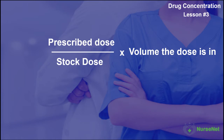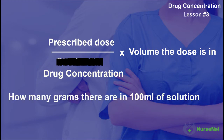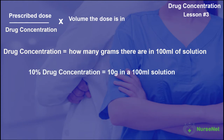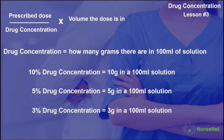What if you're trying to work out how much of a drug you should administer if you aren't given a stock dose but you're given a drug concentration, which is fairly common in today's nursing practice? A drug concentration tells you how many grams there are in 100 milliliters of solution. Therefore, a 10% concentration means 10 grams in 100ml, a 5% concentration means 5 grams in 100ml, and a 3% concentration means 3 grams in 100ml.